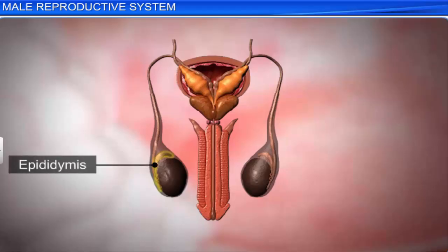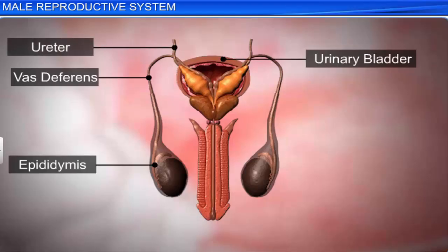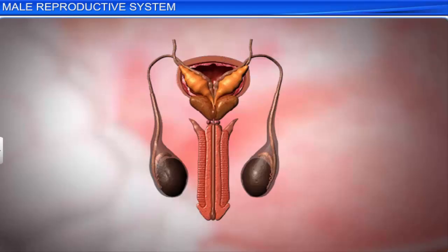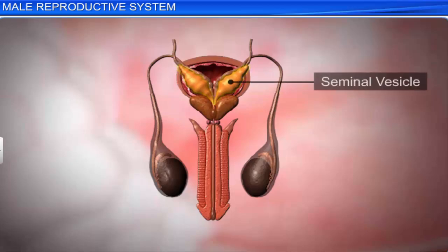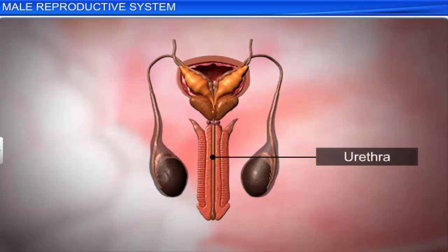The epididymis leads to the vas deferens, which ascends into the abdomen and curves around the ureter, looping over the urinary bladder. It extends backwards and receives the duct from the seminal vesicle, and finally opens into the urethra as an ejaculatory duct.